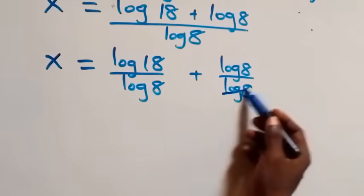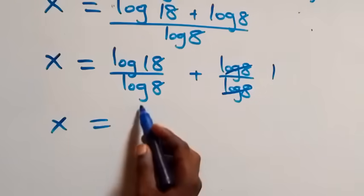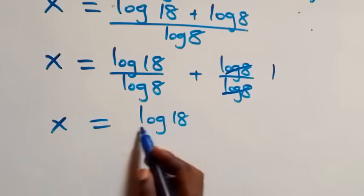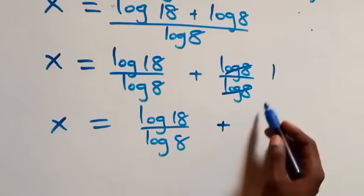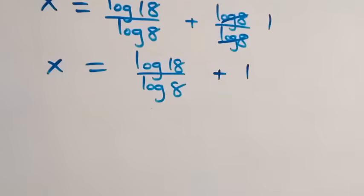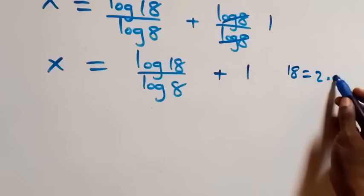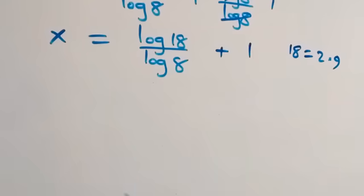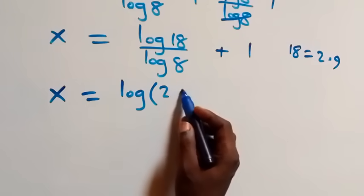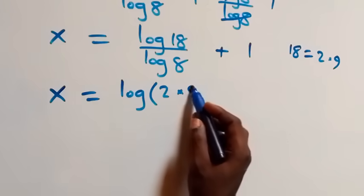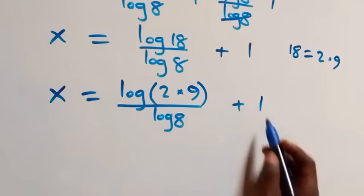Log 8 cancels each other, we have 1 left, and what we have becomes x equals log 18 over log 8 plus 1. From here our next step: we can also write 18 as 2 times 9. Then what we have becomes x equals log(2 times 9) over log 8 plus 1.